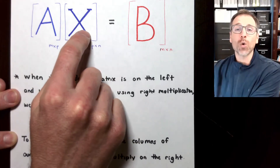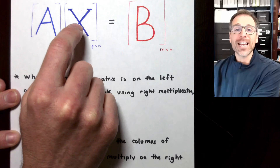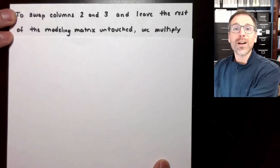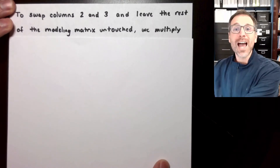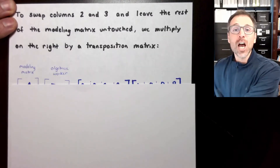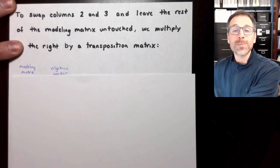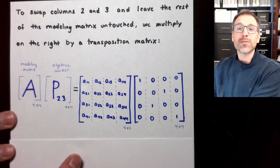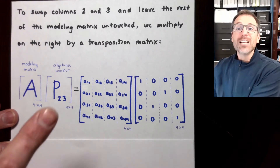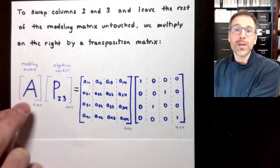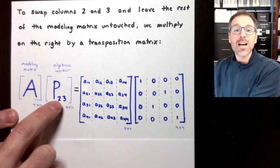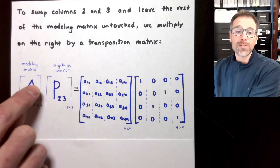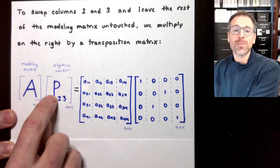Another way to say this is that if we want to do algebraic work on the columns of our modeling matrix, we're going to multiply that matrix on the right-hand side by an algebraic worker. Figuring out the exact form of matrix X is an art, and we'll spend a lot of time talking about how to get special matrices to do work on the columns of matrix A. In this example, we want to swap columns two and three and leave the rest of the modeling matrix untouched.